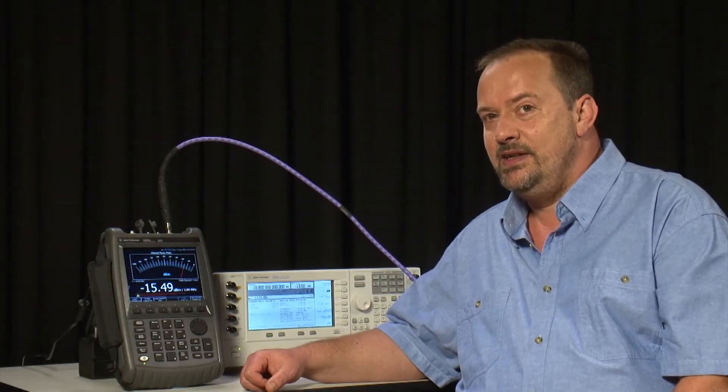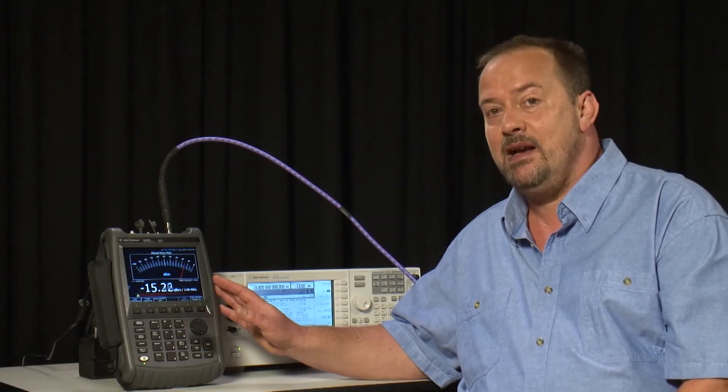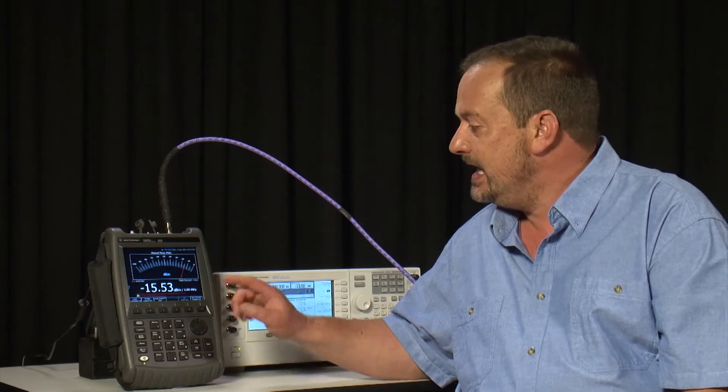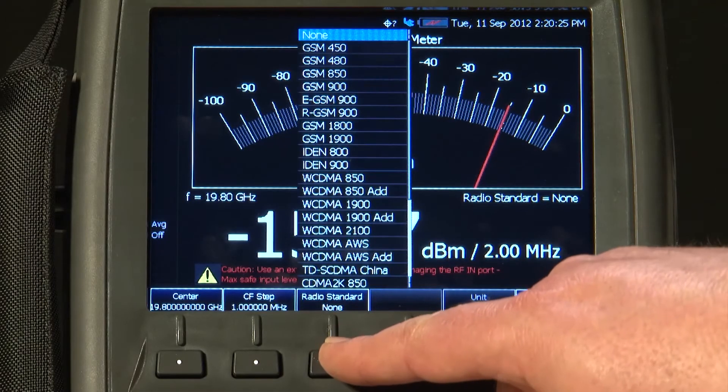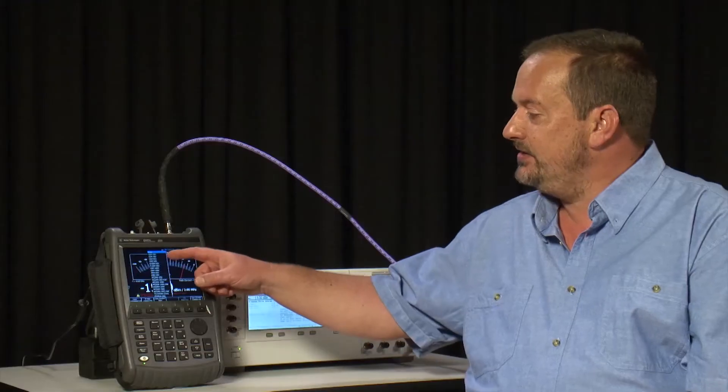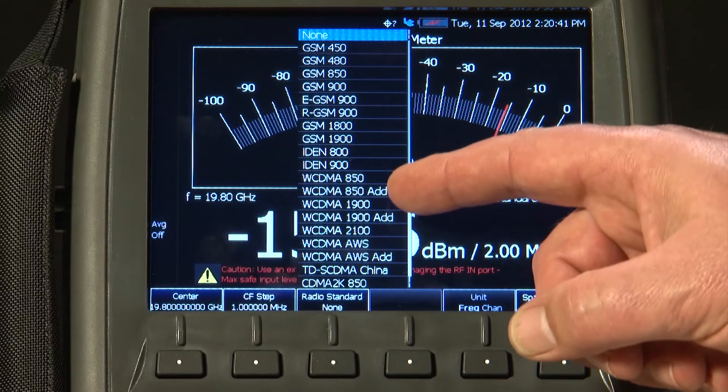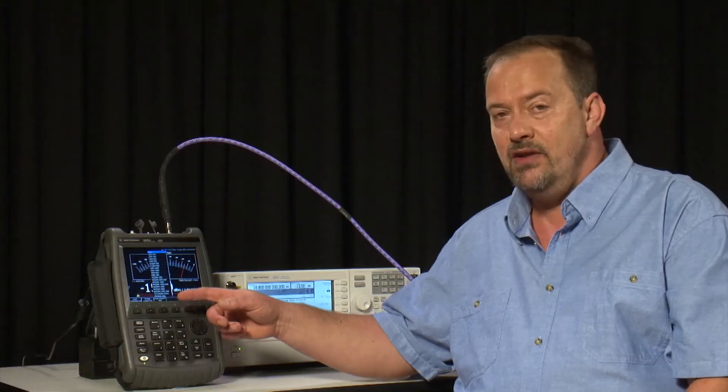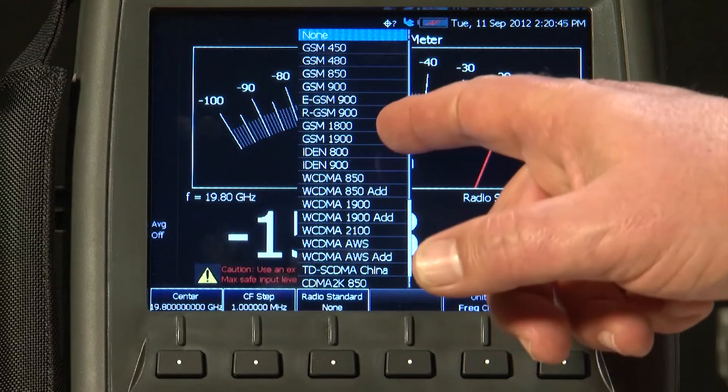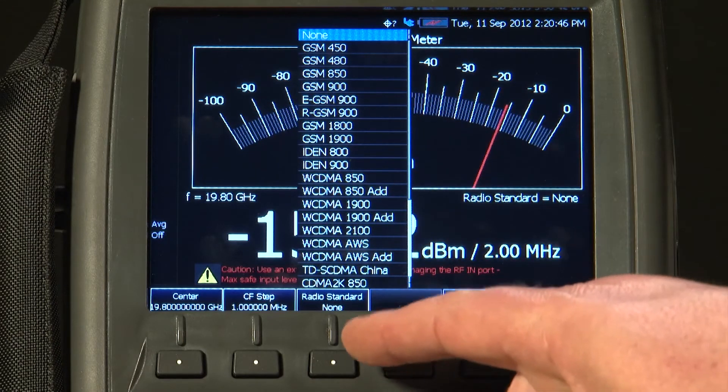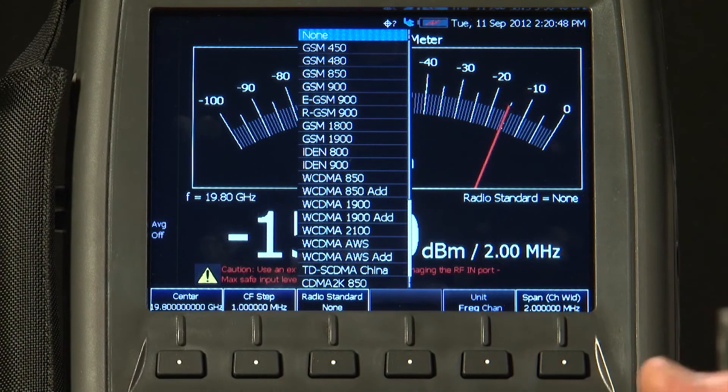And one final thing I will point out that is available in both the channel power meter and in the spectrum analyzer options is the radio standard here. If you are working in one of the commercial radio standards such as GSM, WCDMA, or whatever, then if you do not know the frequency of the channel, you can just select that radio standard and then enter the frequency by channel number instead of in MHz.